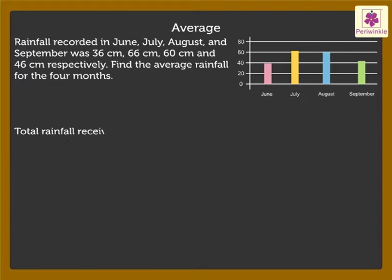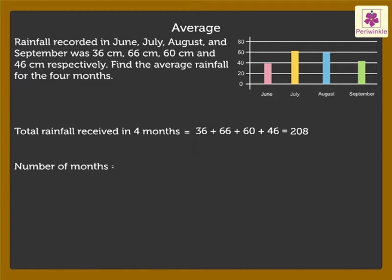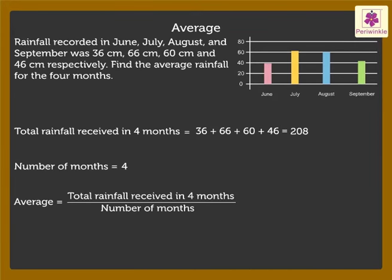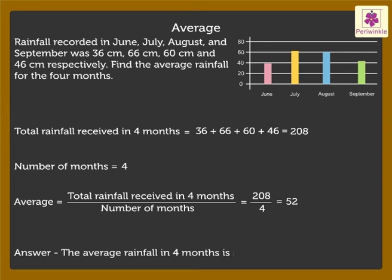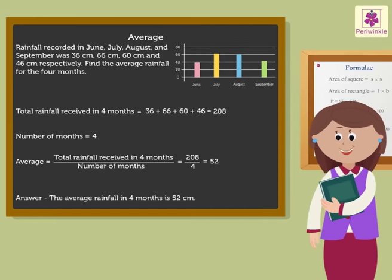Sum of the rainfall received in 4 months is equal to 36 plus 66 plus 60 plus 46, which is equal to 208. Number of months is equal to 4. Thus, average is equal to 208 divided by 4, which is equal to 52. Thus, the average rainfall in 4 months is 52 centimetres. Wasn't it easy finding average?